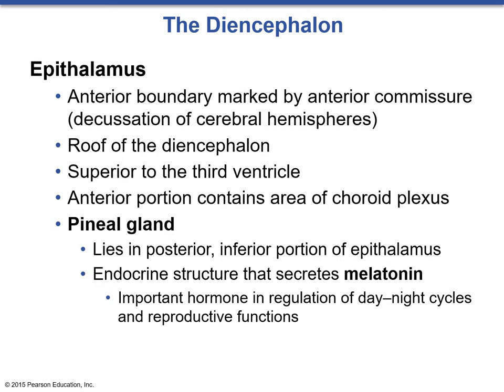We'll start with the epithalamus, which is going to form the roof of the third ventricle and contain the choroid plexus. It also contains an endocrine organ called the pineal gland. The pineal gland lies in the posterior inferior portion of it and secretes a compound called melatonin. Melatonin is an important hormone in the regulation of day and night cycles and also helps regulate female menstrual cycle hormones.